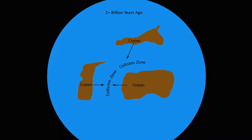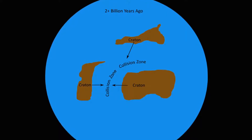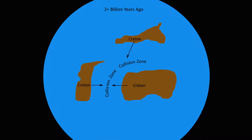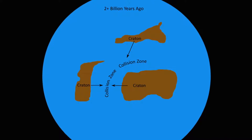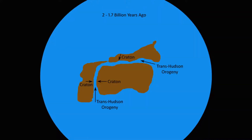Archaean rock is the initial rock that formed during the very early days of Earth when the Earth had cooled enough to allow its initial crust of rock to solidify. The collision zone of these cratons occurred about two billion years ago and is known as the Trans-Hudson Orogeny.